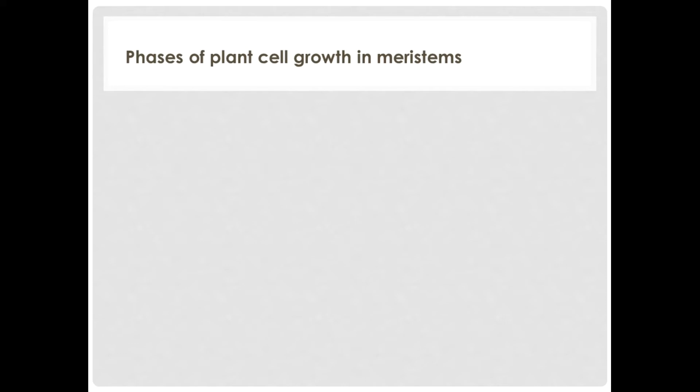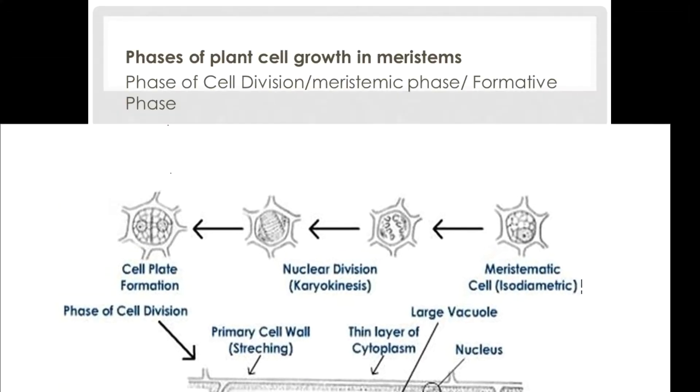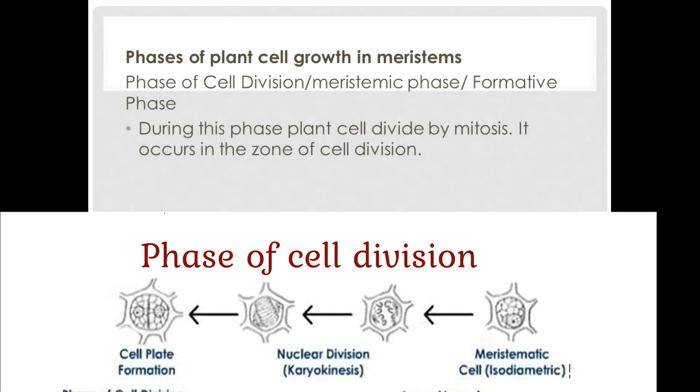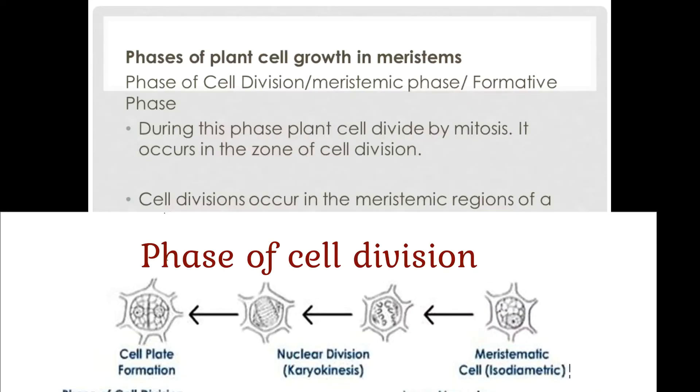Now, let's take a look at the phases of plant cell growth in meristems. The first phase is the phase of cell division or the meristemic phase or the formative phase. During this phase, a plant cell divides by mitosis and it occurs in the zone of cell division. Cell division occur in the meristemic regions of a plant. One daughter cell remains in the meristem while the other goes on to become a part of the permanent plant body.